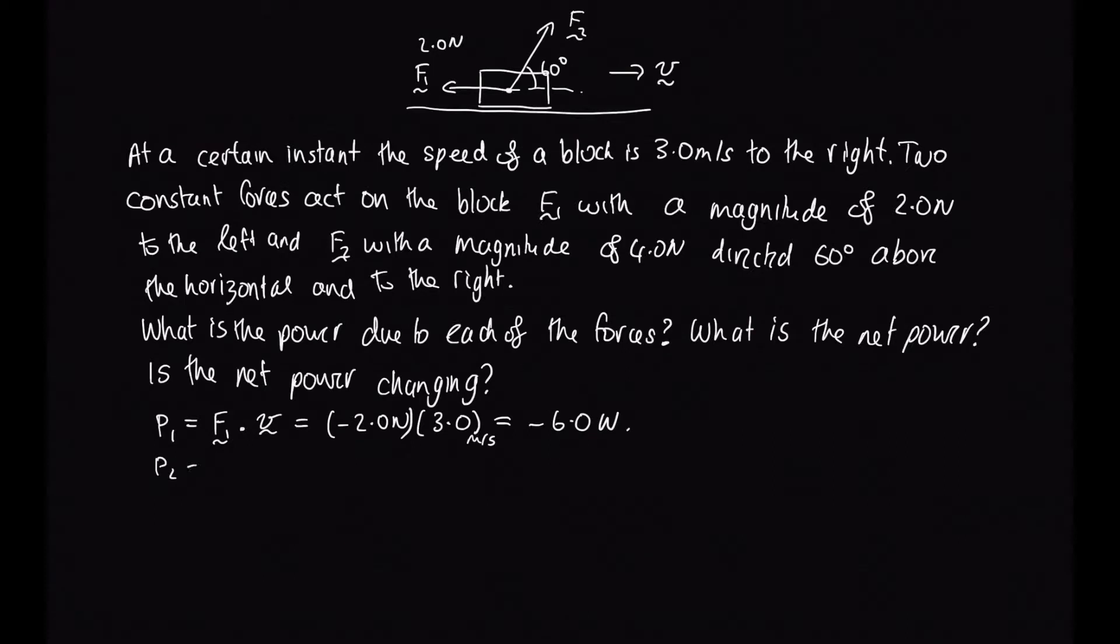The power of the second one is given by F2 dot v, and in this case there is an angle between force 2 and v. So this is written as F2 v cos 60, because 60 degrees is the angle in this case. So this is equal to 4 times 3 times cos 60. Cos of 60 is a half, so this is equal to 6 watts.